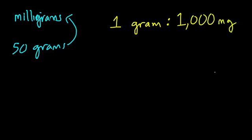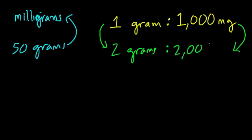So this is a ratio, it's constant. So if I have 2 grams, then I've doubled the amount of grams, so I need to double the amount of milligrams. So with 2 grams, I'd have 2,000 milligrams.